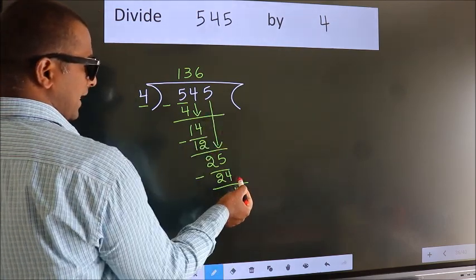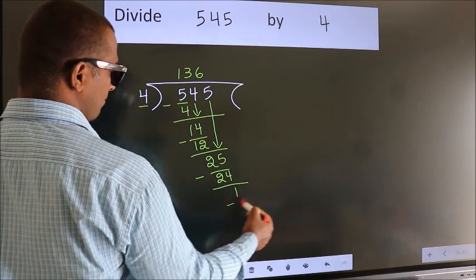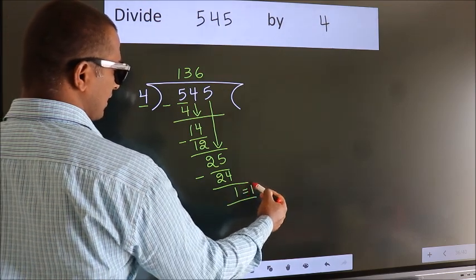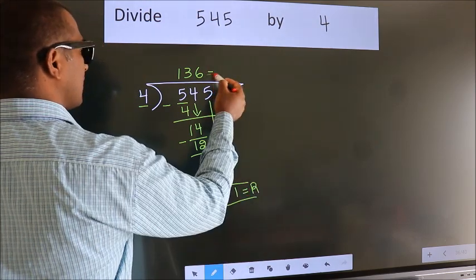No more numbers to bring it down. So, we stop here. This is our remainder. This is our quotient.